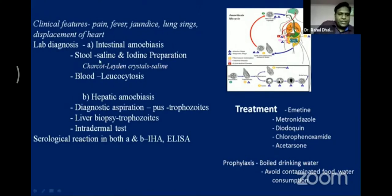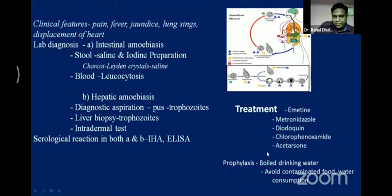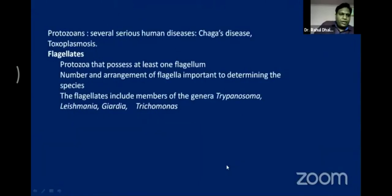Clinical features include pain, fever, and jaundice. For intestinal amoebiasis: diagnose using stool specimen with saline and iodine preparation, and indirect blood tests. For hepatic amoebiasis: aspirate the abscess sample and observe for trophozoites. Treat the patient with metronidazole, diloxanide furoate, and chlorhexidine. Prophylaxis: consume boiled drinking water and avoid contaminated food and water.